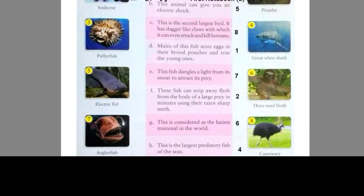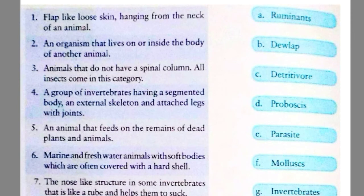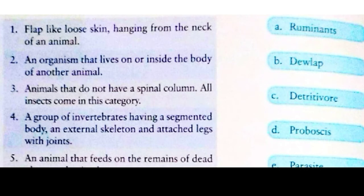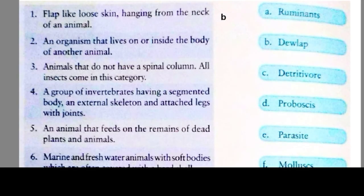Now exercise number 12: Animal Terminology. Here we will know about different terms used for animals by matching descriptions in column A to terms in column B. Question 1: flap-like loose skin hanging from the neck of an animal — this term is dewlap, option B. Question 2: an organism that feeds on or inside the body of another animal — this term is called parasite, option E.